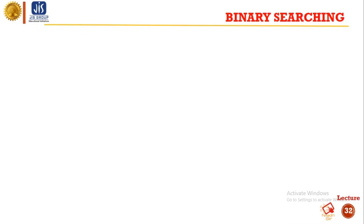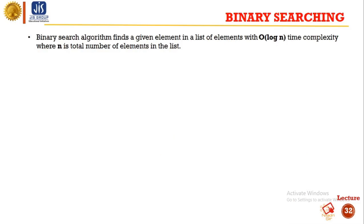So what is binary searching? Binary search algorithm basically finds a given element in a list of elements with a time complexity of order of log n, where n is the total number of elements in the list. Binary search is a fast search algorithm with runtime complexity of order of log n. This search algorithm works on the principle of divide and conquer. For this algorithm to work properly, the data collection should be in sorted form.